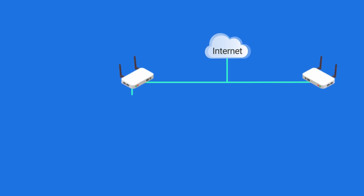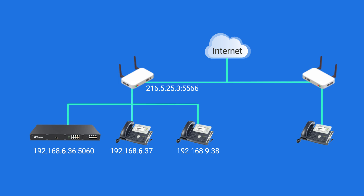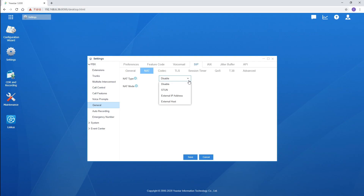Let's take this scenario as an example. The router has a static public IP assigned by the local carrier, and all devices are connected to the same router. The PBX and one SIP phone are deployed in the same network segment, while another phone is in a different segment. The default SIP port 5060 of the PBX is forwarded to port 5566 of the public IP. A remote SIP phone in another private network is registered to the PBX via the internet.